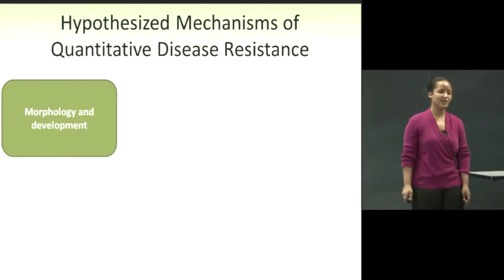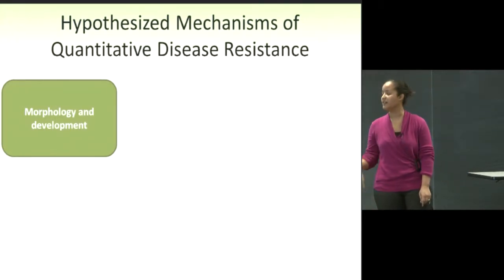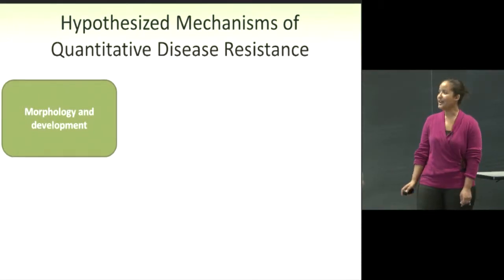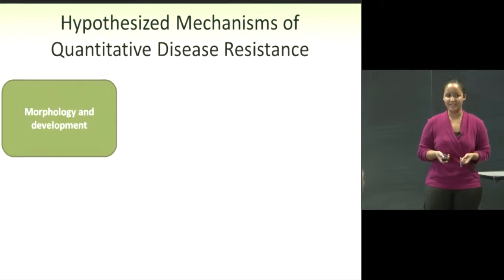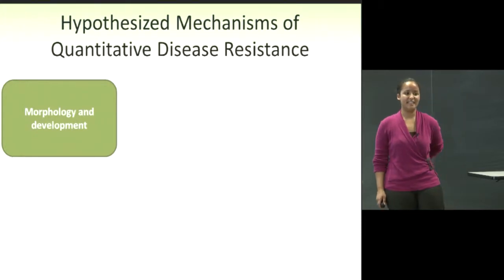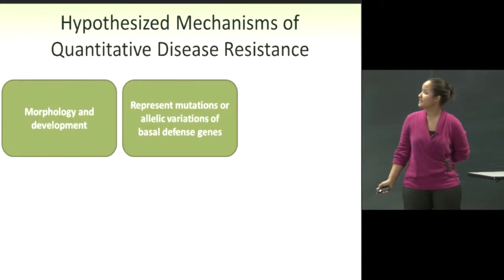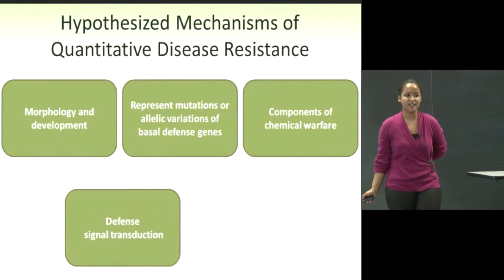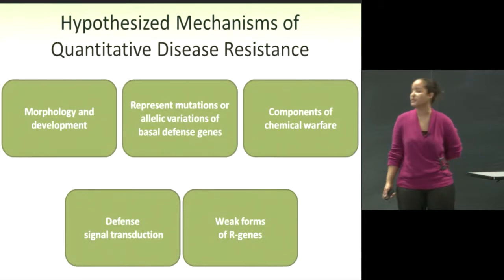Jesse Poland and colleagues wrote an article called 'Shades of Grey: The World of Quantitative Disease Resistance.' They came up with about five hypotheses based on previous literature of mechanisms underlying quantitative disease resistance: morphology and development, mutations or allelic variation in basal defense, components of chemical warfare, defense signal transduction, and weak forms of R genes — meaning they've just lost their effectiveness over time.